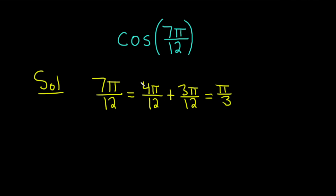The 4 cancels and 4 goes into 12 three times. And then 3 goes into 3 one time and it goes into 12 four times. This is plus π over 4.